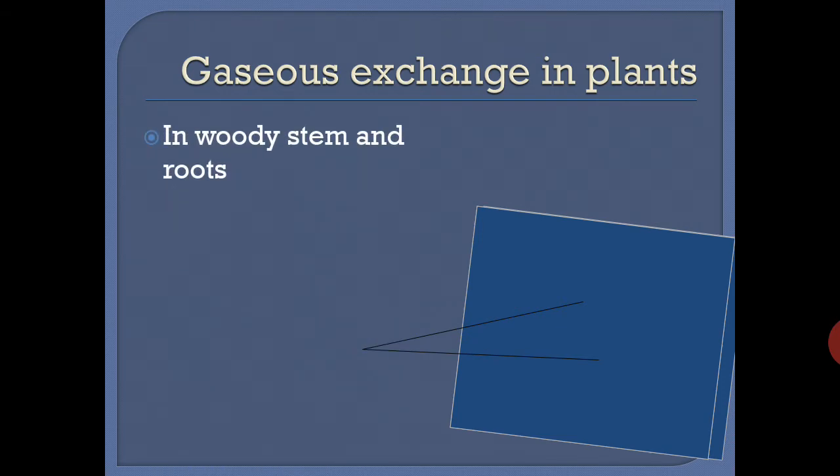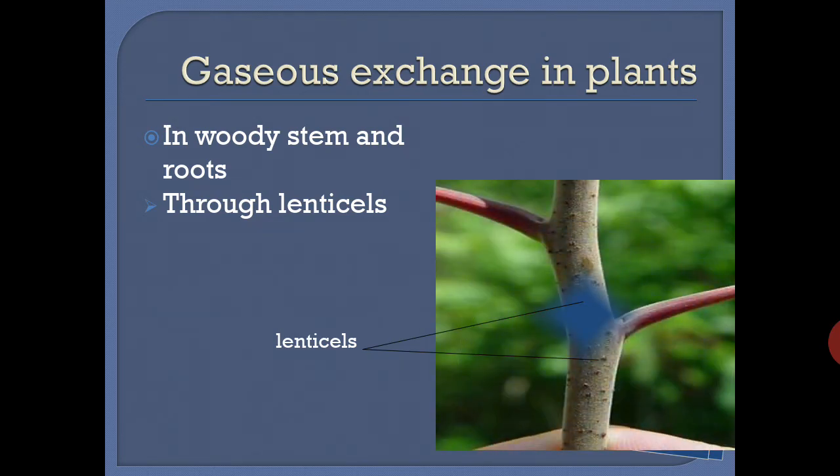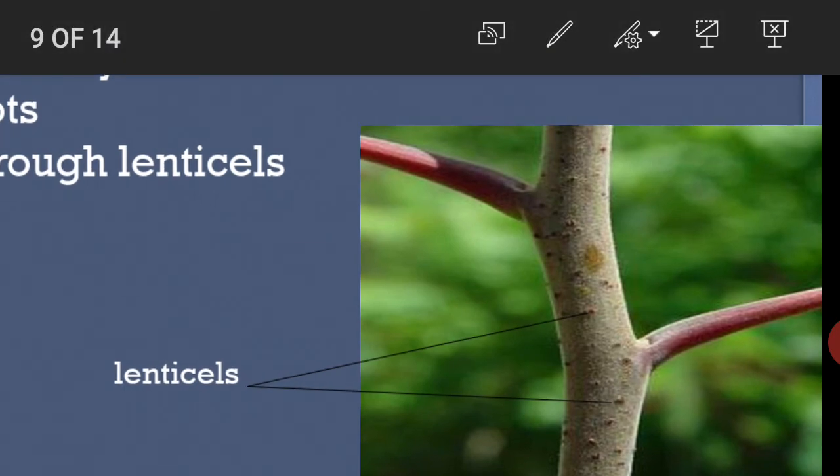In woody stems and mature roots, the surface of stem and root is covered by bark which is impervious. The bark does not allow gases and water inside and outside. There are some pores in the layer of bark which are called lenticels. You can see the lenticels. These lenticels allow air to pass through them.